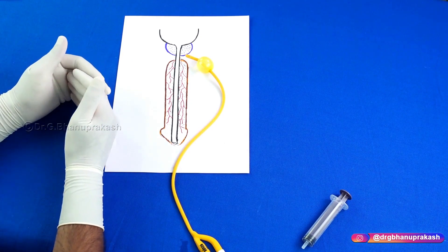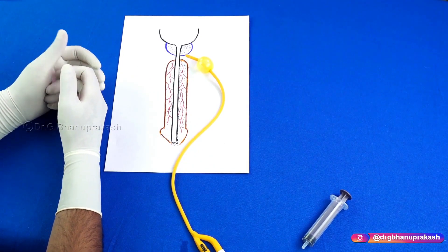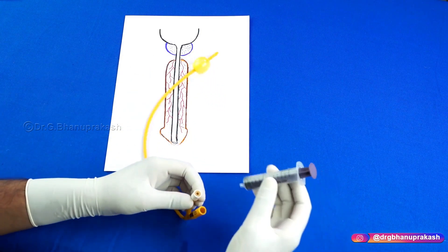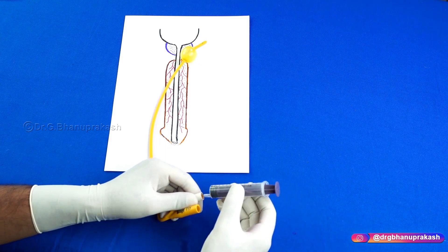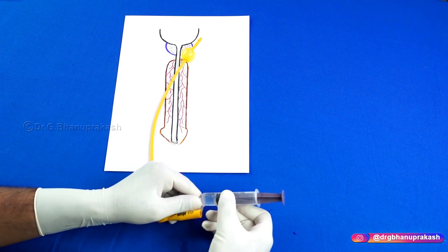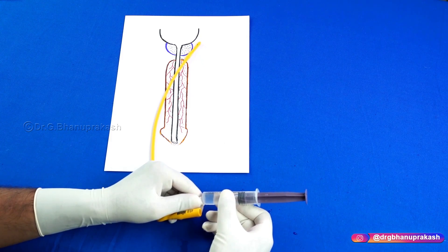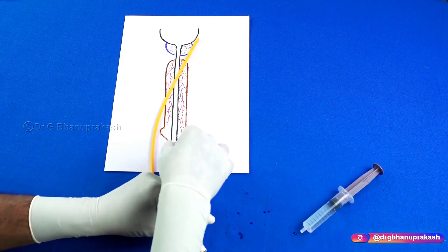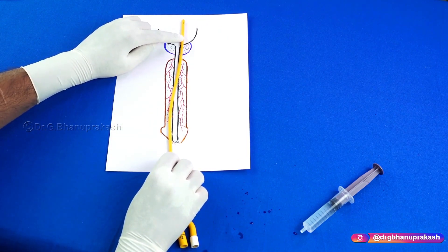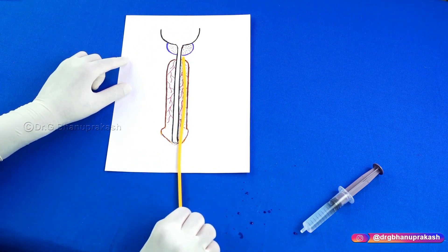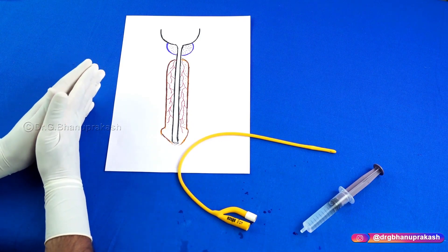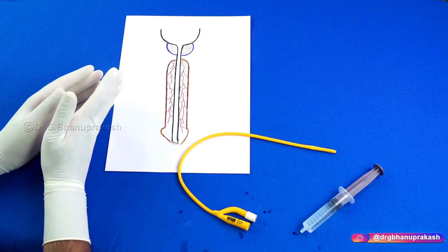Once the patient is getting discharged, you remove the Foley's catheter. To remove it, insert the same 10 cc syringe into the balloon port — because of the high pressure, the balloon will automatically deflate. Once the balloon is deflated, slowly pull the catheter outside. Do not pull it quickly because you cannot be sure the balloon is completely deflated. Slowly pull the catheter outside and dispose of it. This is the complete process of inserting and removing a Foley's catheter.